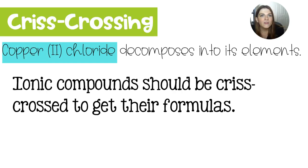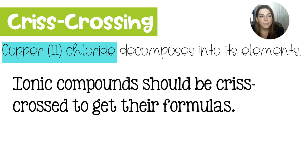When you have ionic compounds, it's important to remember that you need to crisscross — or rather uncrisscross — in order to get the charges. So here we have copper 2 chloride. This two, the Roman numeral two, is telling us the charge of the copper.